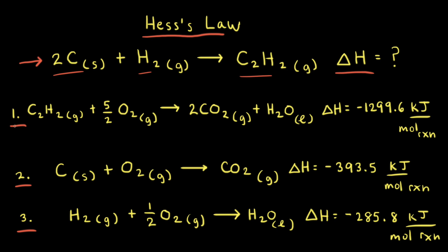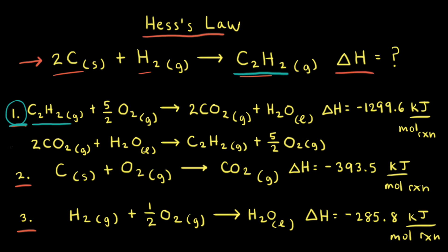For example, if we look at reaction one, there's one mole of acetylene on the left side of the equation. Comparing that to the original reaction, there's one mole of acetylene on the right side. So we need to reverse equation one to make it look more like our original reaction. I've gone ahead and reversed equation one down here — what were the products are now the reactants, and what were the reactants have now become the products.